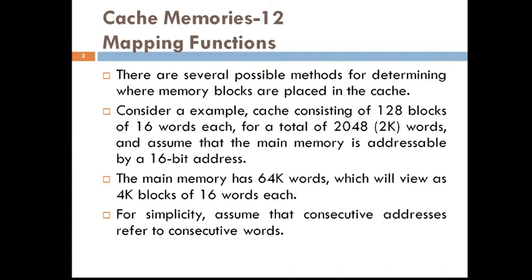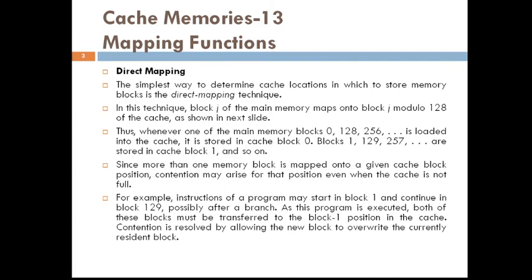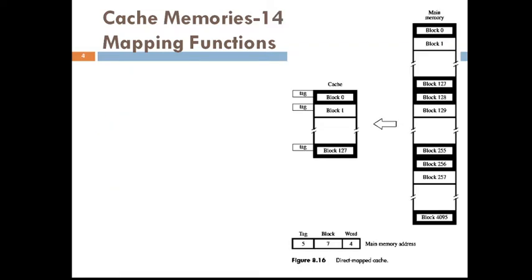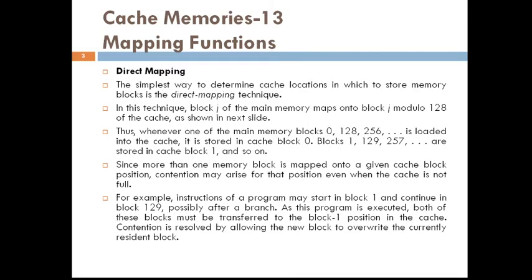The first method we shall study is direct mapping. The simplest way to determine cache locations in which we can store memory blocks is the direct mapping technique. In this technique, block J of the main memory maps onto block J modulo 128 of the cache, as depicted in figure 5.15 from the textbook, which indicates a direct mapped cache.